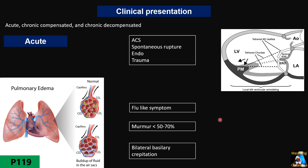Another finding in patients with acute MR is bilateral basilar crackles or rales, the extent of which depends on the severity and may extend higher up in severe cases.